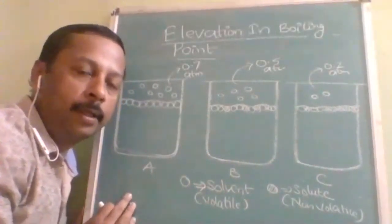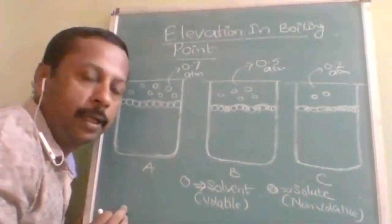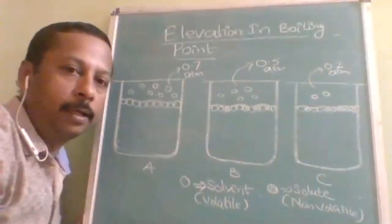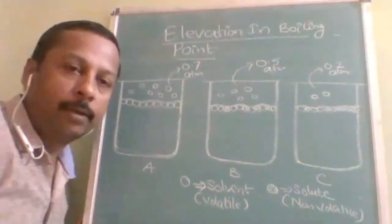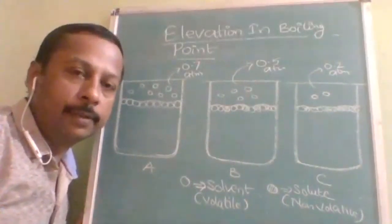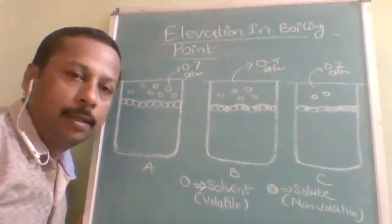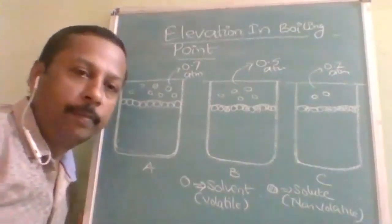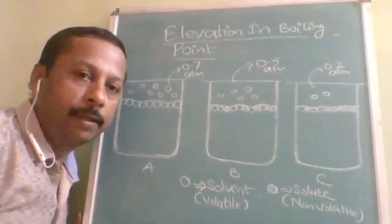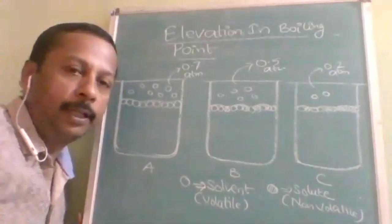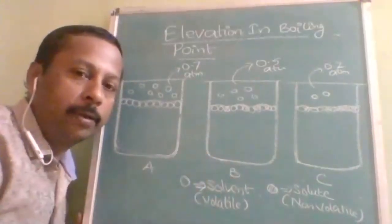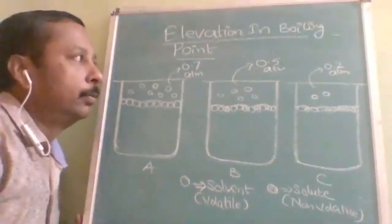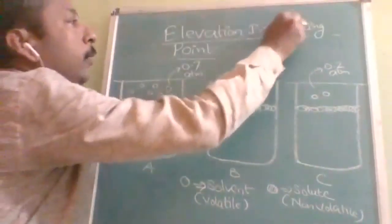This is internally related to relative lowering of vapor pressure. The three interrelated colligative properties are: relative lowering of vapor pressure, elevation in boiling point, and freezing point depression. The same diagram applies to all three but the explanation part differs.